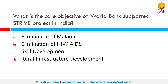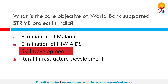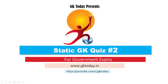What is the core objective of the World Bank-supported STRIVE project in India? STRIVE stands for Skill Strengthening for Industrial Value Enhancement. The World Bank committed a $125 million loan, approximately ₹800 crore, to India for skill development. So the correct answer is: Skill Development. That's all for this quiz — stay tuned for the next one. Goodbye!